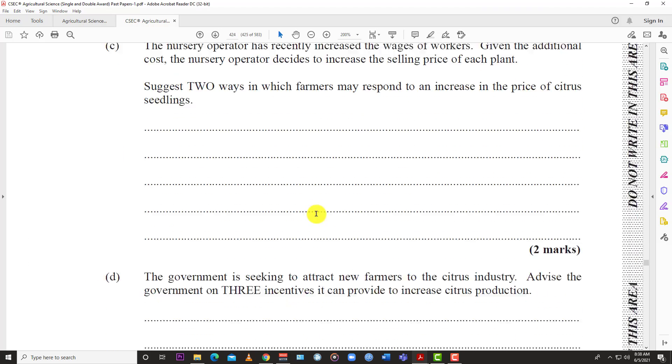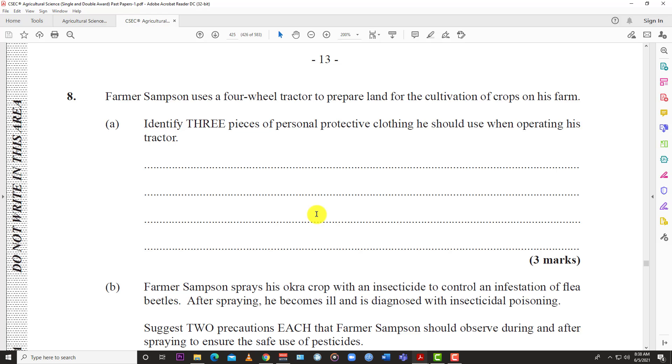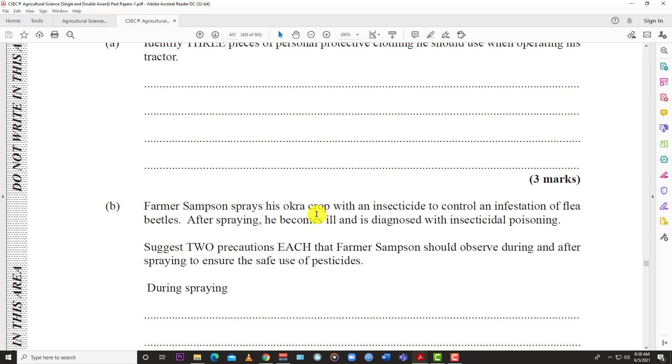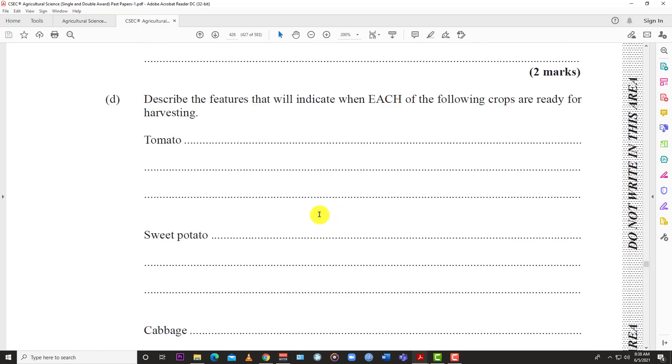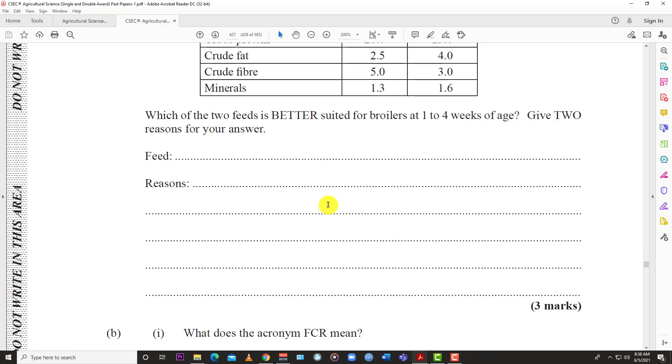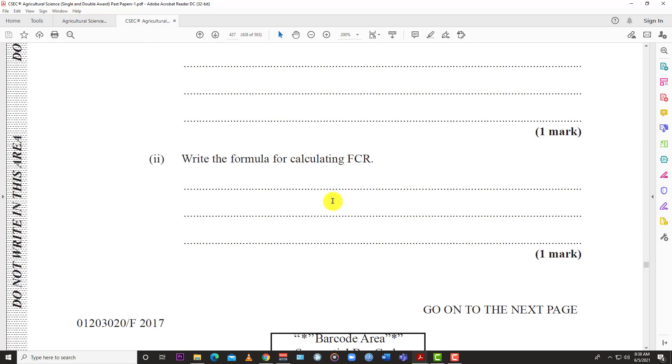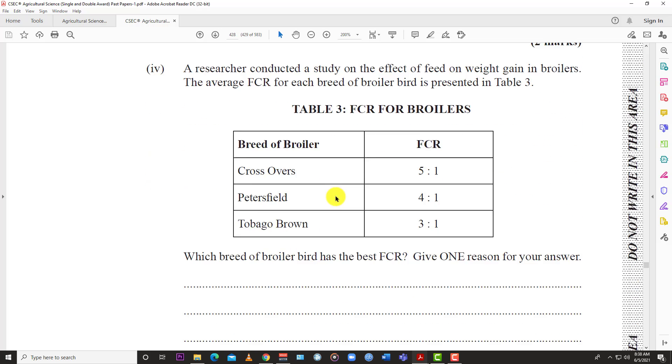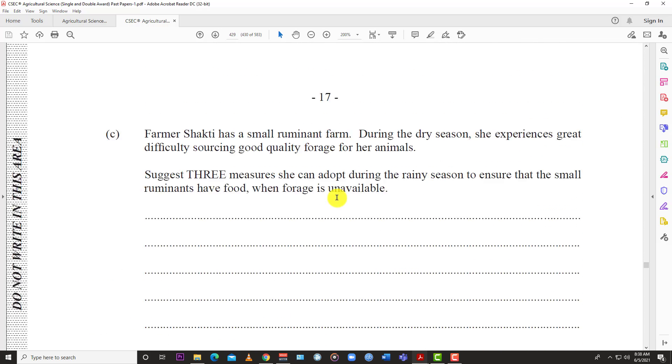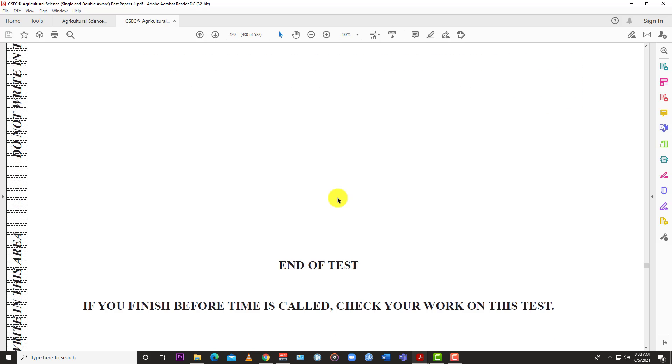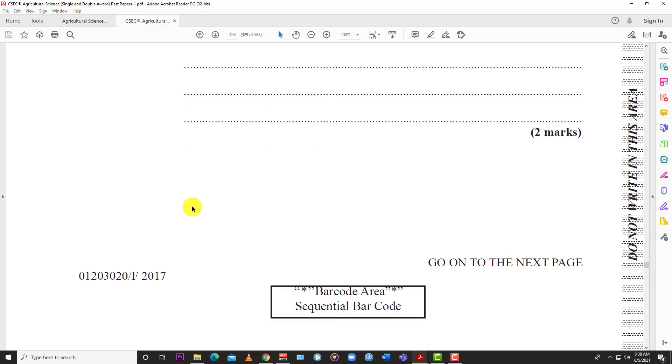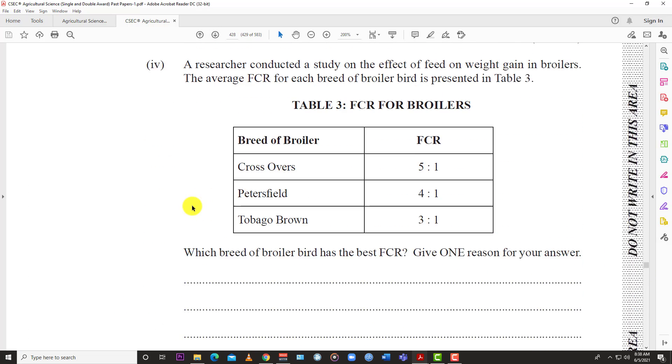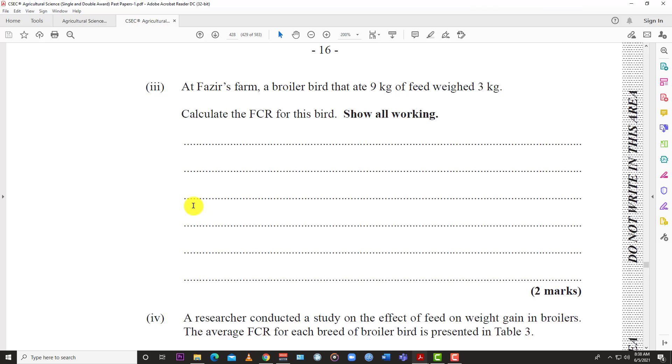Make sure you stay tuned to LearnSKN to know when we drop number eight and eventually number nine that would end this paper, the May-June 2017 single award paper two for agricultural science. We have two more questions and that would be it. Thanks for watching and thanks for listening.